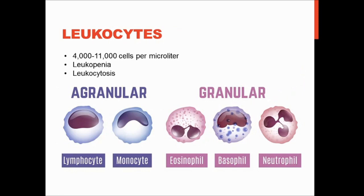Leukocytes are white blood cells. The normal amount is about 4,000 to 11,000 cells per microliter of blood. Leukopenia is when you have too few white blood cells, and leukocytosis is when you have a high number, which is normally a sign of infection. White blood cells are categorized into granular and agranular types. The granular white blood cells all end in '-phil': eosinophil, basophil, and neutrophil. The ones that end in '-cyte' are agranular — lymphocytes and monocytes.